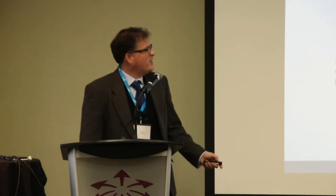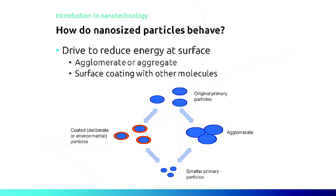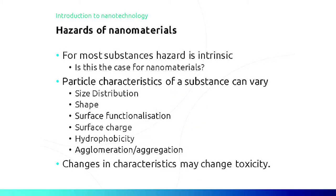Another issue with nanoparticles is their particular behaviour. They have a large surface area and large surface energy, and they like to get rid of that energy. In reality, you don't often get individual particles just floating around at the nanoparticle scale. What they'll do is clump together into what's known as agglomerates or aggregates to reduce the energy. Or they'll end up with either a deliberate coating or be coated with environmental or biological molecules such as proteins or humic acids — almost what I call a gobstopper-type effect.